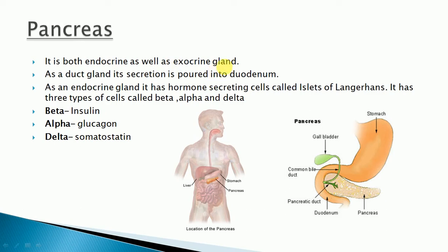Exocrine glands are those glands which have a special duct for their secretions to travel. They do not pour their secretions directly into the blood. In the case of the pancreas, it is both an endocrine as well as an exocrine gland. As an exocrine gland, its secretion is poured into the duodenum.